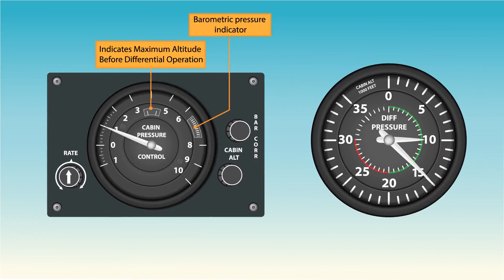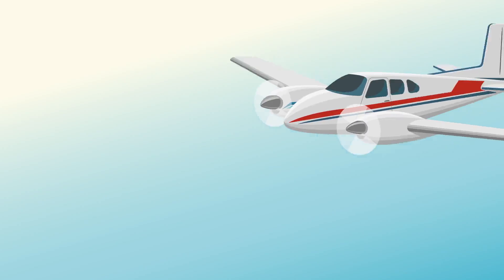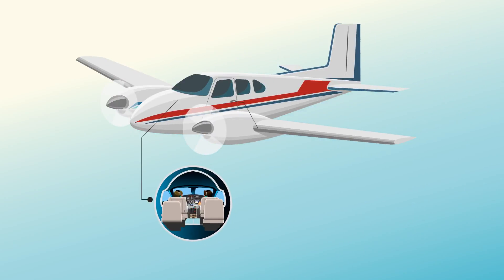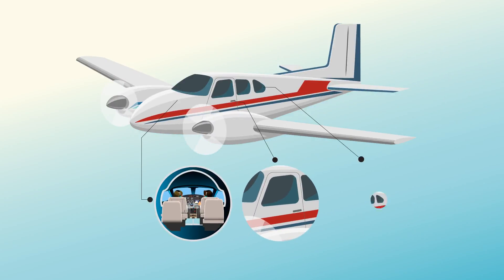Differential control is used to prevent the maximum differential pressure for which the fuselage was designed from being exceeded. This differential pressure is determined by the structural strength of the cabin and often by the relationship of the cabin size to the probable areas of rupture, such as window areas and doors.